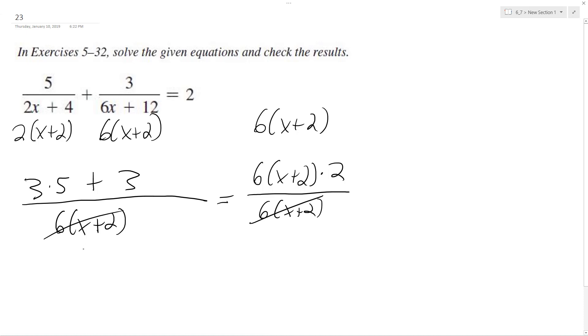So we're left with 15 plus 3, which is 18, is equal to 12 times x plus 2. So we end up with 12x plus 24. Subtract 24 from both sides. We end up with 12x equals negative 6. And ultimately, x is equal to negative 6 divided by 12 is negative 1 half.